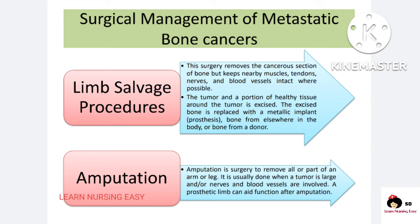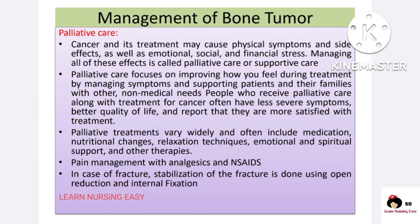Amputation means the whole leg, arm, or the area where the cancer is located is fully removed, and a prosthetic limb is fitted. We have to teach the patient how to use the prosthetic limb. Palliative care is given when cancers are very severe or metastatic and surgery cannot be performed — physical symptoms are treated, and emotional, social, and financial stress of the client is addressed for both patient and family to cope with the disability and maintain quality of life. Medications like analgesics are used for pain, along with chemotherapy drugs if indicated, and nutritional therapy.